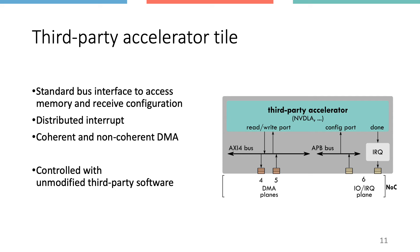When integrating a third-party IP, the socket degenerates into a simpler one, where the DMA and TLB are replaced with standard bus interfaces such as AXI, and the list of configuration registers is replaced with a slave interface such as APB. The plan is to continue growing the list of supported standards to extend the set of IPs that can be seamlessly integrated into ESP. As long as the software compiles for the supported processor architectures — RISC-V or SPARC — ESP can execute the unmodified third-party software, as demonstrated with the NVIDIA Deep Learning Accelerator.